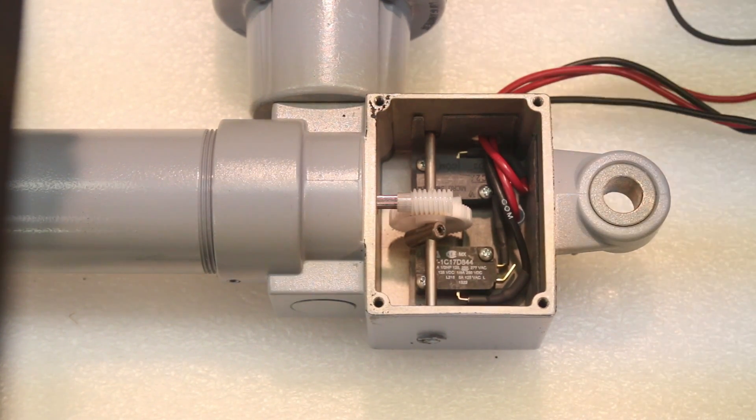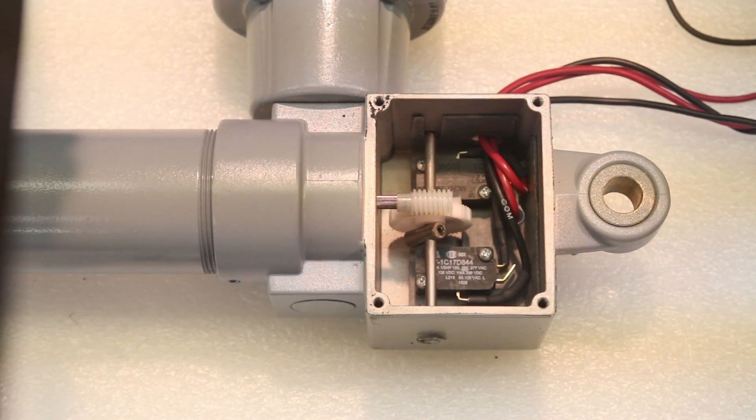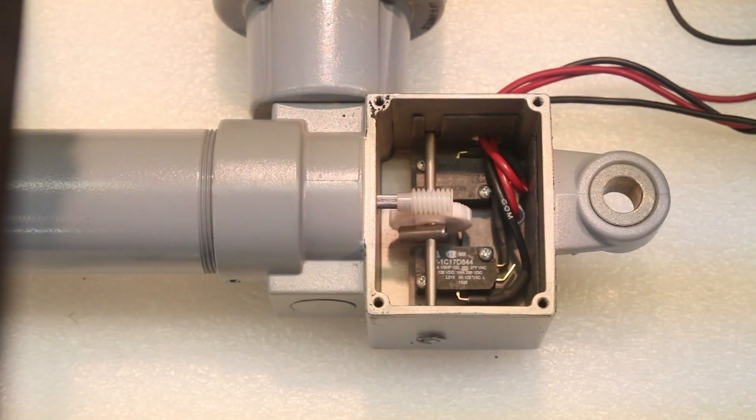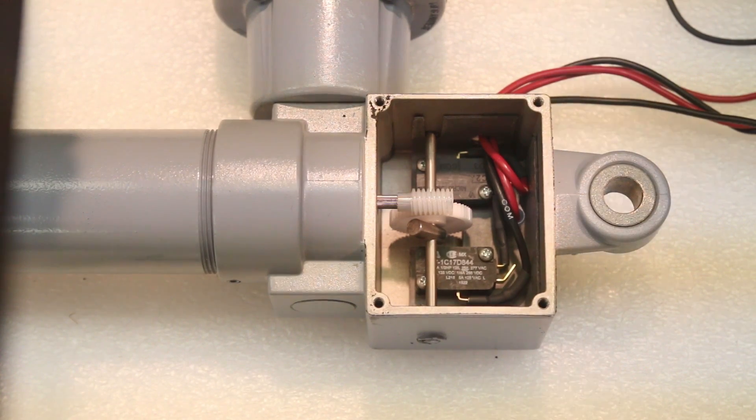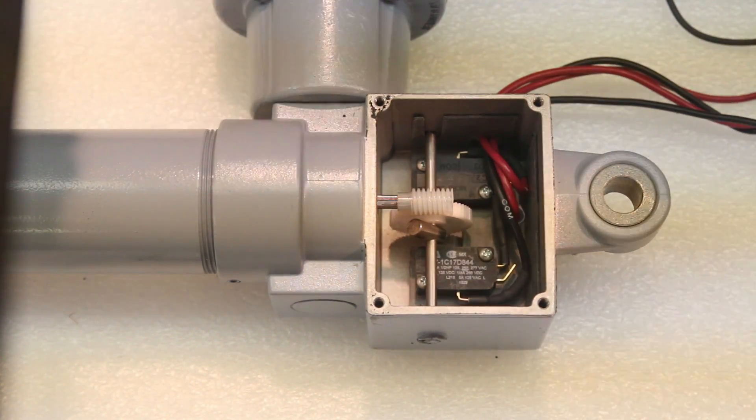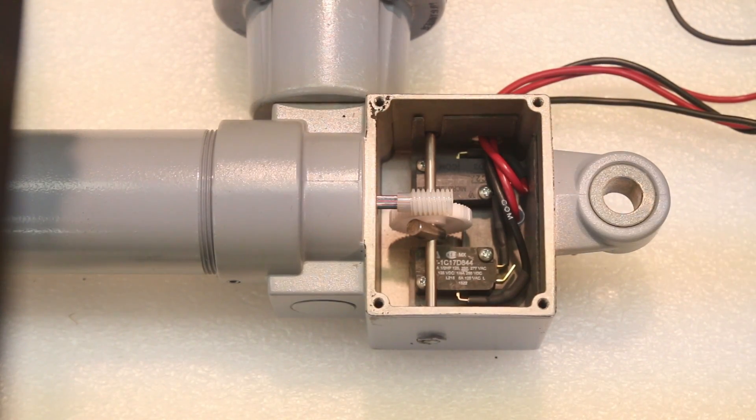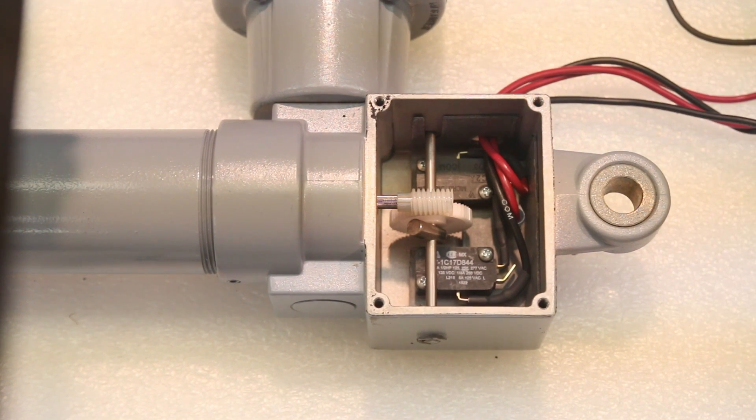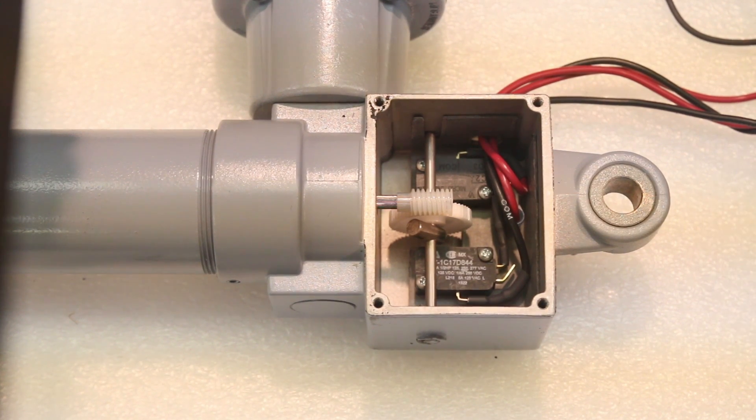We will now run the actuator in the retract direction until the retract limit switch is activated. At this point, we set the translating tube to the closed height that we're needing for our application. Then, we restrain the tube from rotating and extend the actuator until we achieve the extended height necessary to satisfy our application.